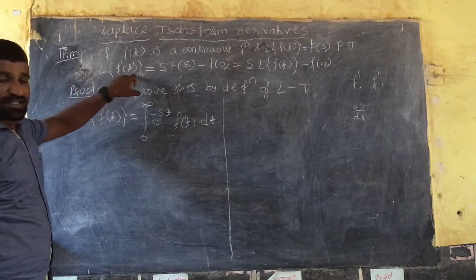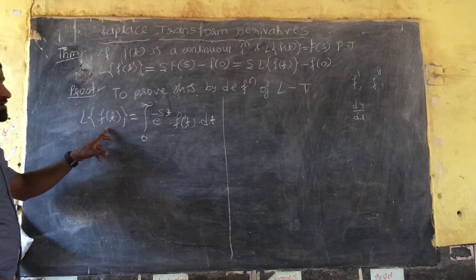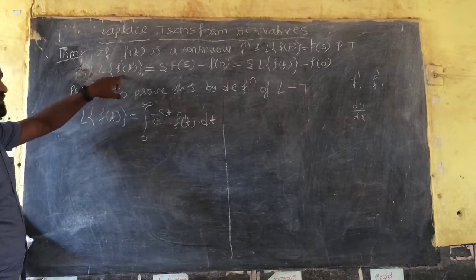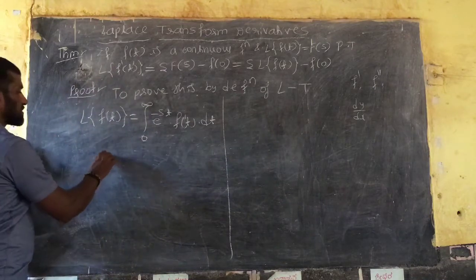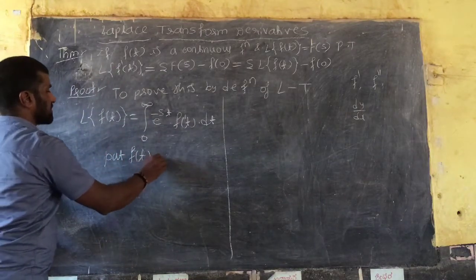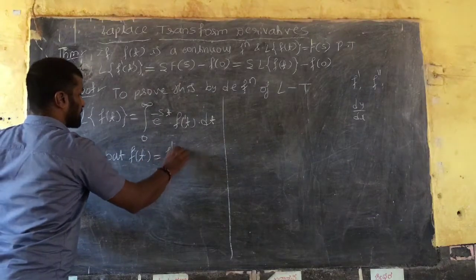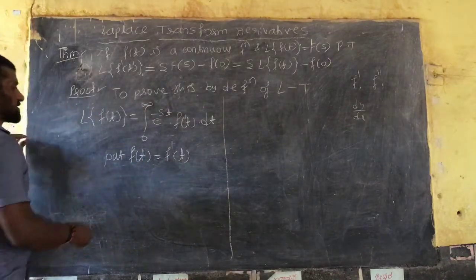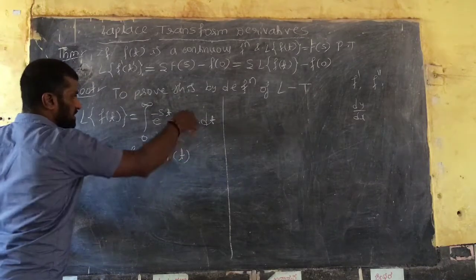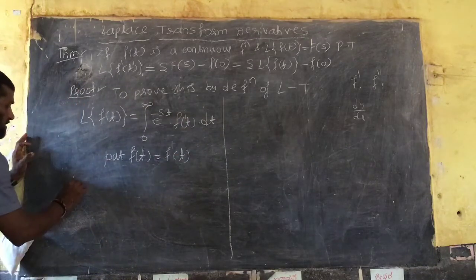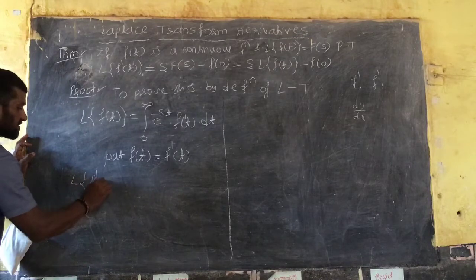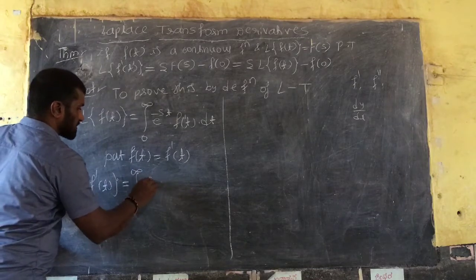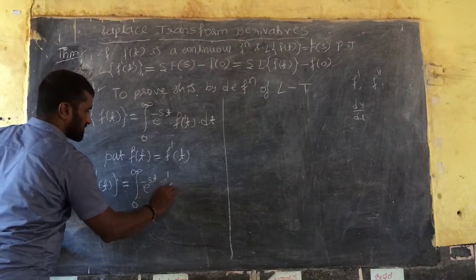We have to prove L{f'(t)}. In the definition of L{f(t)}, substitute f(t) with f'(t). I don't know the explicit function f, so that's why we put f(t) equal to f'(t) in the equation. We get L{f'(t)}.